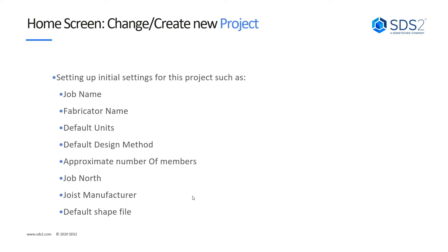We will be opening up SDS2 and learning how to create a new project and change into another project. We'll be setting up some initial settings such as our job name, fabricator name, default units, default design method, approximate number of members, job north, joist manufacturer, and our default shapefile.